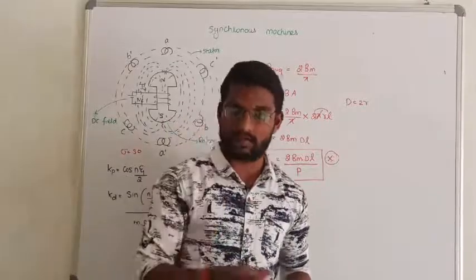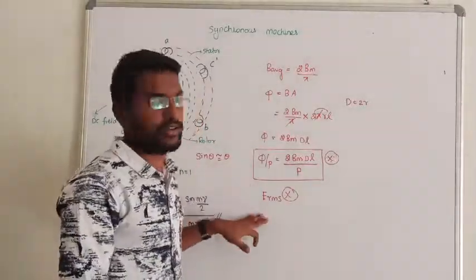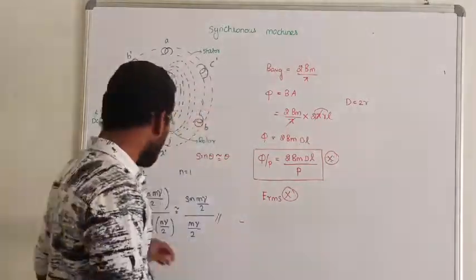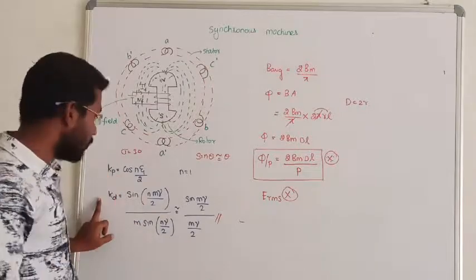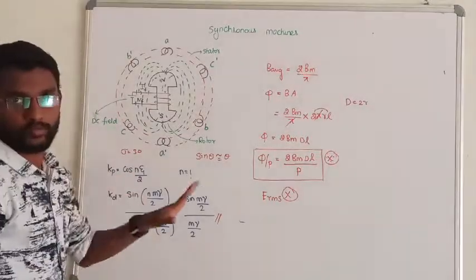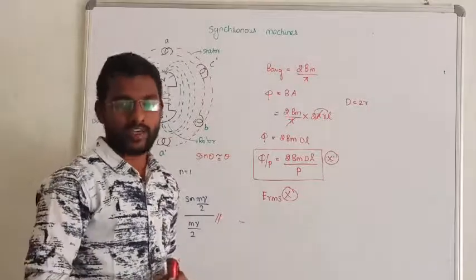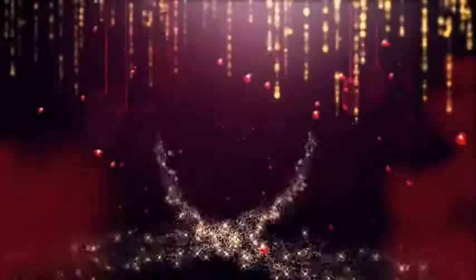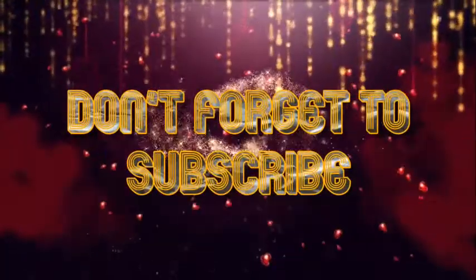If there's no information about flux generation, use this formula to calculate flux. Then you can calculate the RMS voltage. Remember the RMS and flux calculation equations - the pitch factor and distribution factor are also very important. For fundamental values, replace n with 1. Thanks for watching.